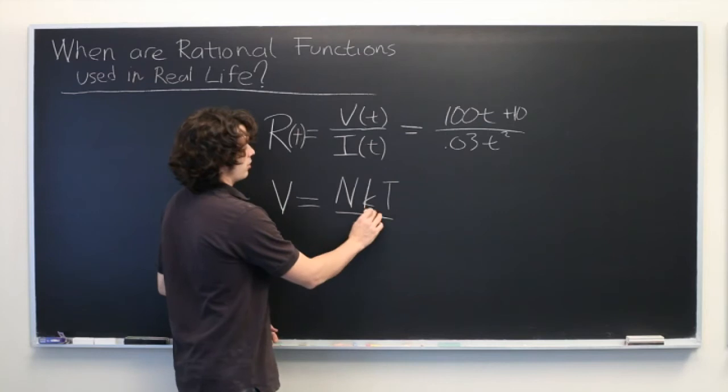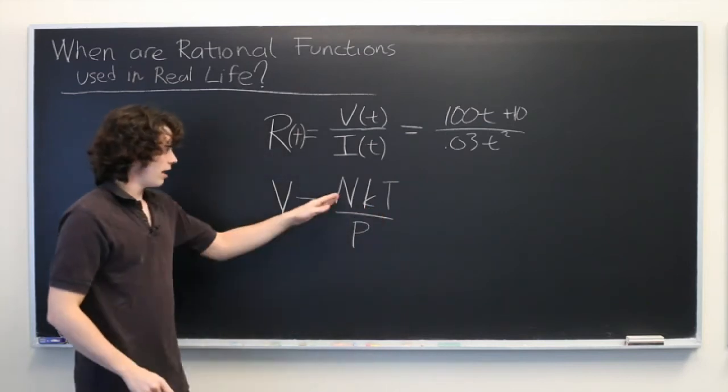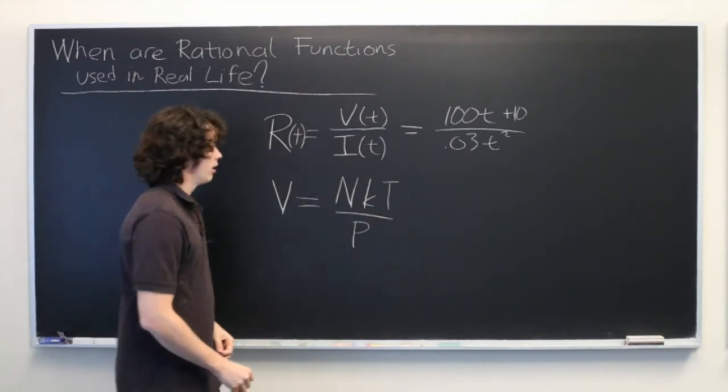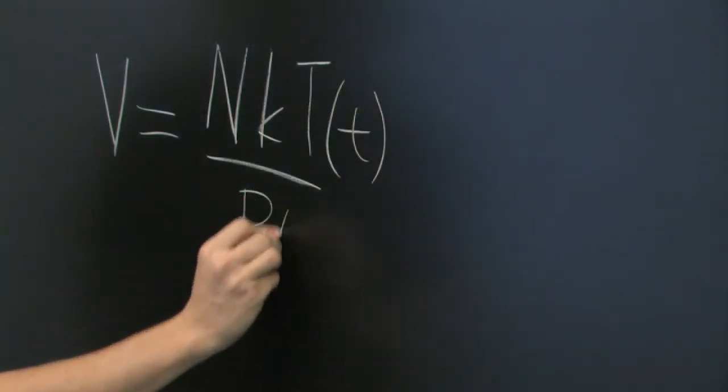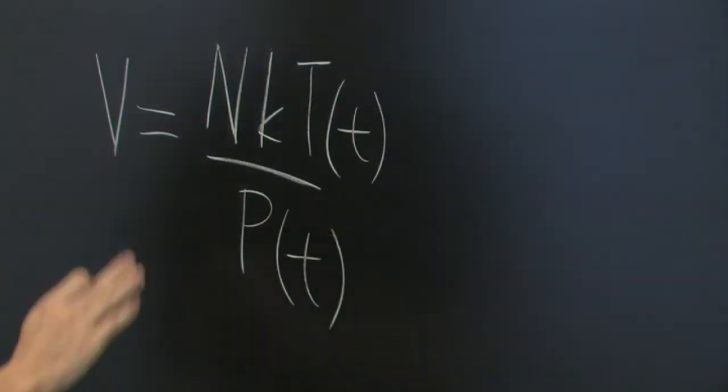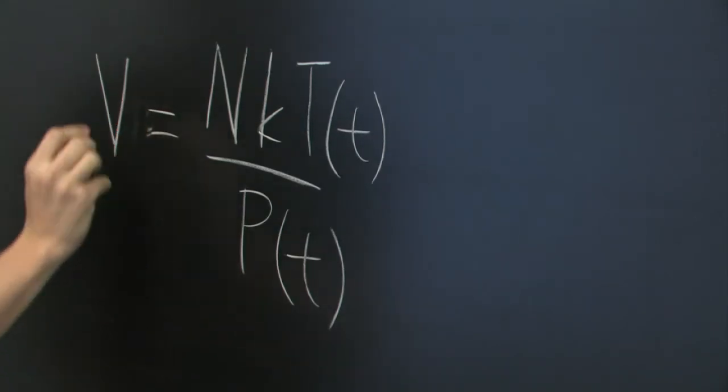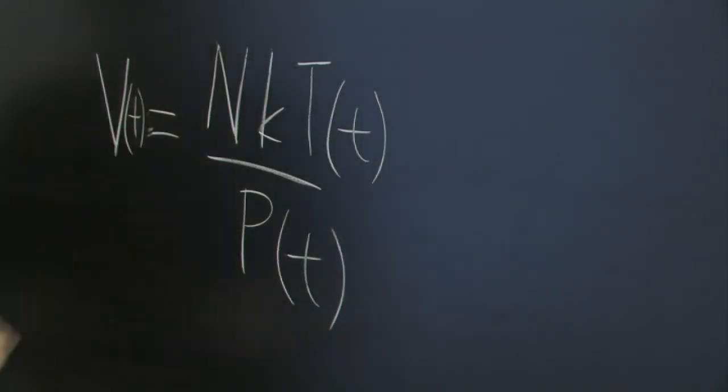K is a constant, so it can't vary with time, but any of these other factors can. And let's say that temperature varies with time and that pressure also varies with time. Well, just as before, that means the volume of the system must also vary with time.